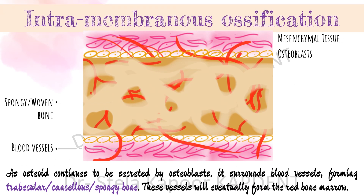As osteoid continues to be secreted by the osteoblasts, it surrounds itself with blood vessels. This leads to the formation of a bone called the trabecular, cancellous, spongy, or woven bone. These vessels will eventually form the red bone marrow.